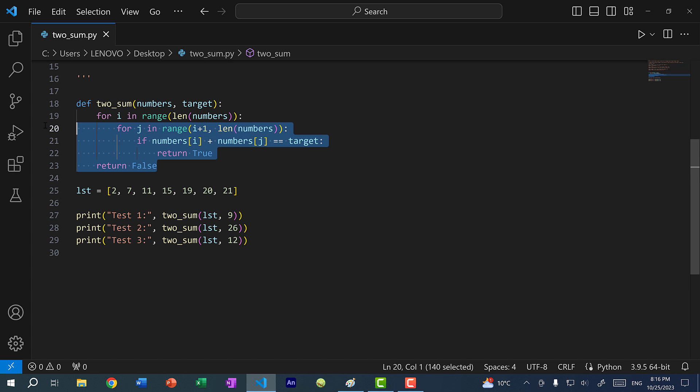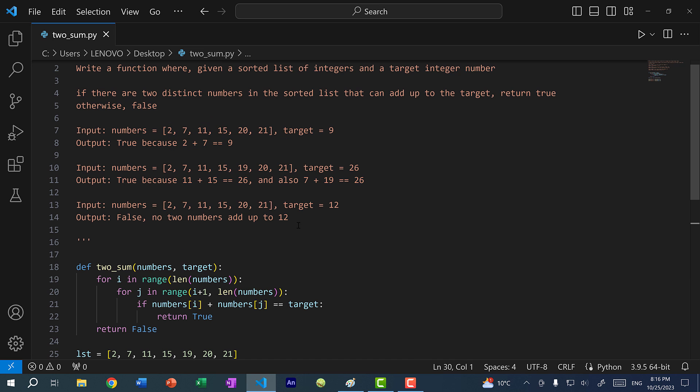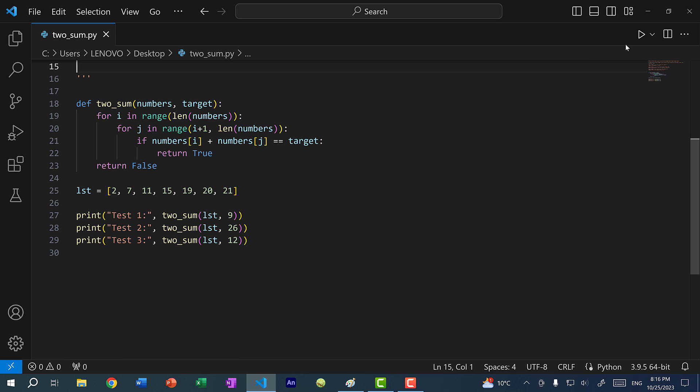All right, so we have our solution here and you probably wrote something similar. Let's analyze the runtime of the solution. Actually, before we do so, let's run the program. These are our test function calls and basically they're the same as examples given up here, so we should expect true, true, false for the outputs. As you can see, we have true, true, false, so our solution works.